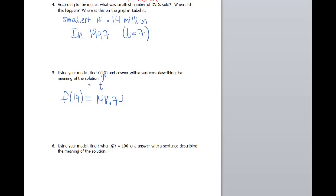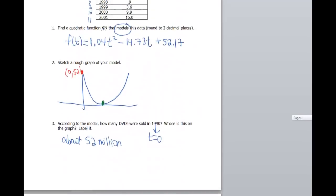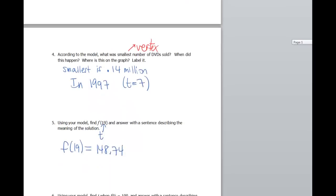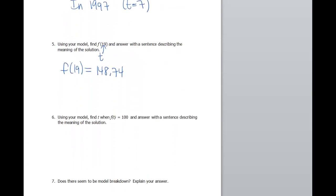Okay, answer with a sentence describing the meaning of the situation. Well, 19 is our t, so let's go back up here. Remember, t is a year since 1990. So that would mean in 2009, there were, since it's in the past now, about 148.74 million DVDs sold.